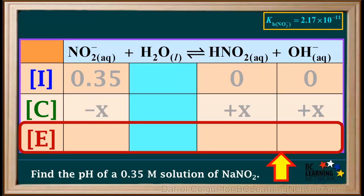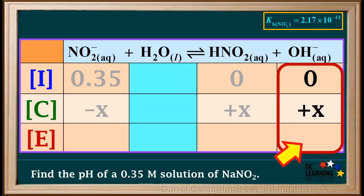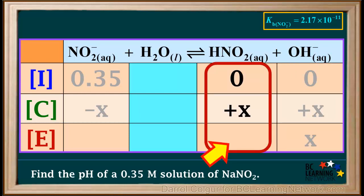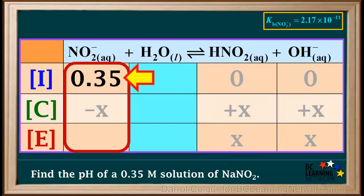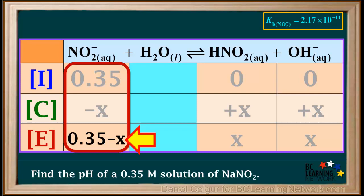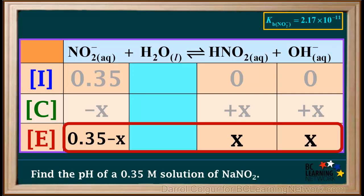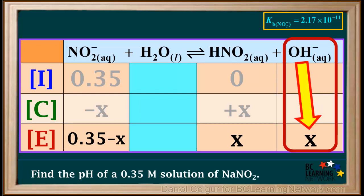Now we can fill in the equilibrium concentration row. The equilibrium concentration of OH⁻ will be zero plus x, which equals x. Similarly, the equilibrium concentration of HNO2 will be zero plus x, which equals x. NO2⁻ started out as 0.35 molar and went down by x, so its equilibrium concentration is 0.35 minus x. Notice that the equilibrium concentration of OH⁻ is x — we'll make a note of that.